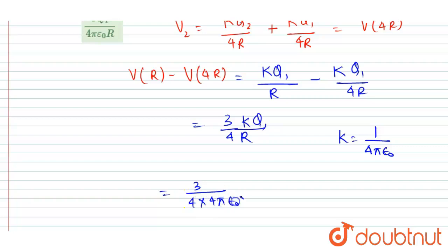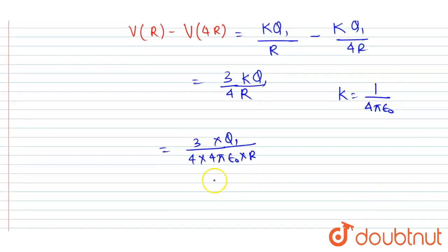Then I will write here 3 by 4 into 4π epsilon naught into r into q1, right? So if you see here, this will be equal to 3 by 16π epsilon naught r into q1 is the potential difference. So this will be our answer.